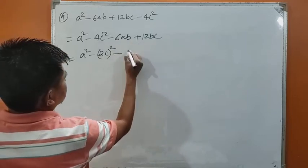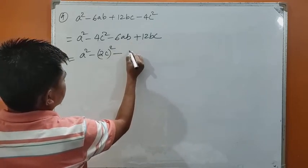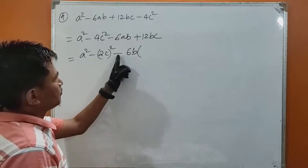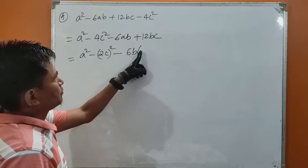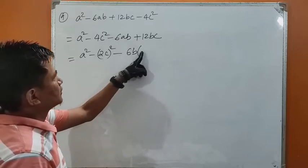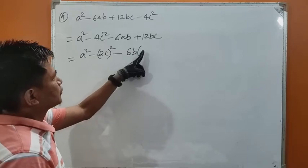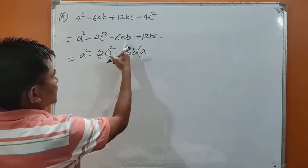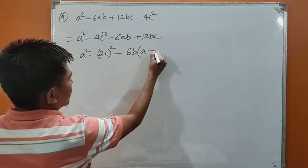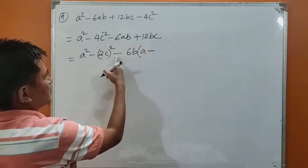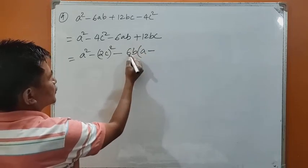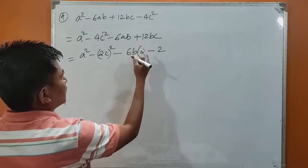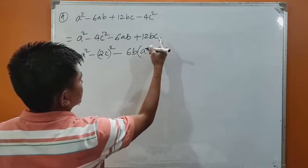From here I can take 6b common. So minus into plus is minus: 6 times 1 is 6, 6b into a is 6ab. Minus into minus is plus: 6b into 2 gives 12bc.